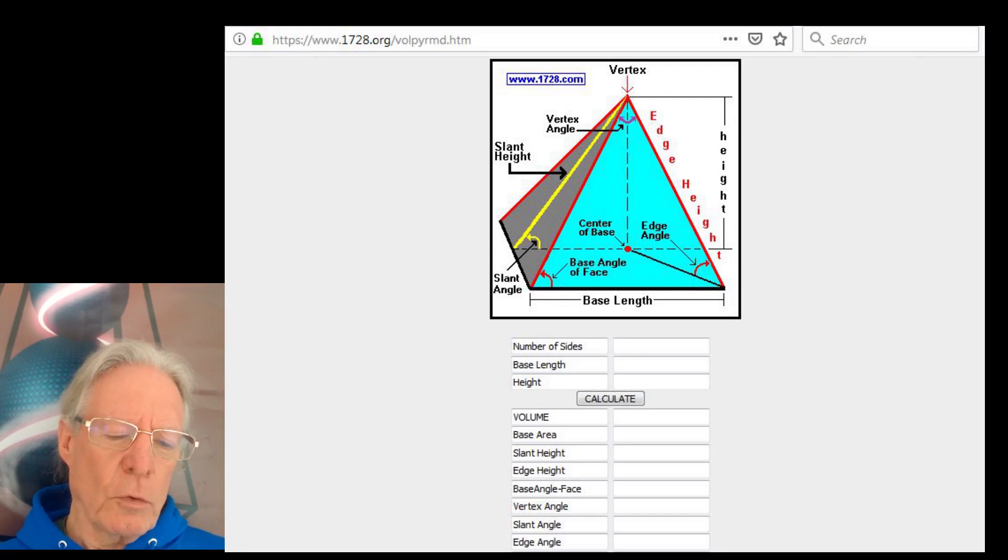So, as opposed to a slant height in two dimensions, we discussed the edge height of a pyramid in three dimensions, which is the height of the pyramid, the length of the point from the edge of the or the corner of the pyramid in three dimensions up to the apex or vortex. And also we have the edge angle of the pyramid, which runs from the center of the pyramid over to the edge of the pyramid as opposed to the slant angle of the pyramid. So once you take it from two dimensions to three dimensions, we end up with some different results, obviously.